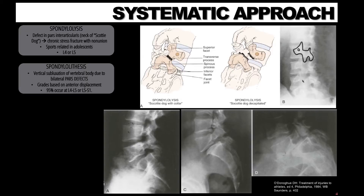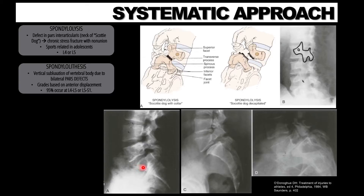Spondylolisthesis refers to ventral subluxation of a vertebral body as a result of a bilateral pars defect or pars articularis fracture. Usually four grades are based on the degree of anterior displacement. Looking at image A, we can see a pars defect in L5 where there is a hypodense area. This arch defect in L5 also has a mild forward displacement of the L5 vertebrae onto S1, and the patient will present with backache but no gross disability.